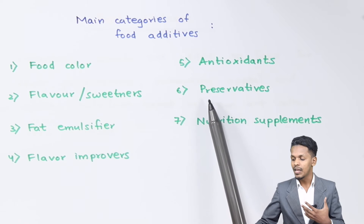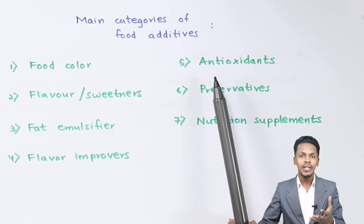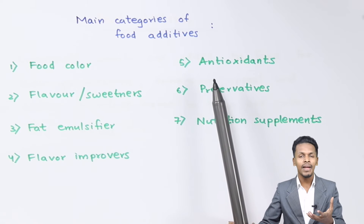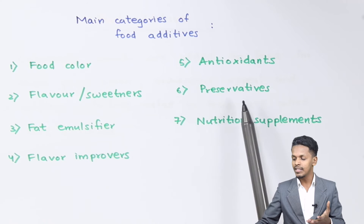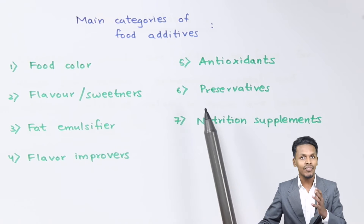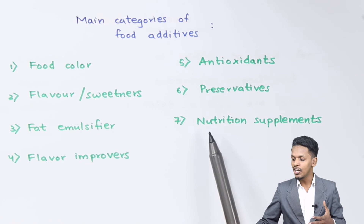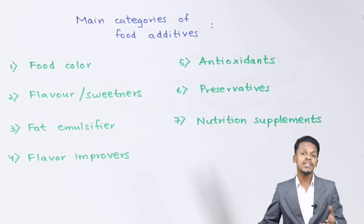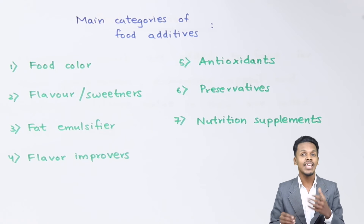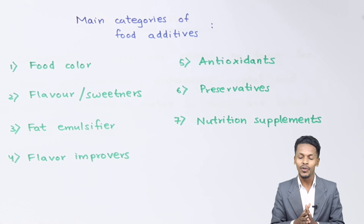Talking about the next category — preservatives. Antioxidants prevent the oxidation of the food, and thereby it doesn't spoil and is preserved. Preservatives are also a separate category, and I am going to talk about them in a different lecture. The next main category is nutrition supplements — minerals and vitamins are basically added in the food nowadays so as to make the food consist of nutritive value.